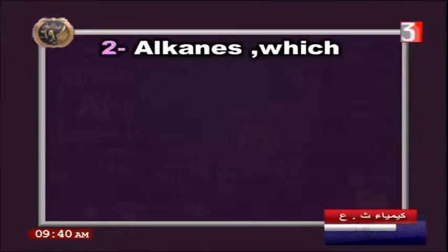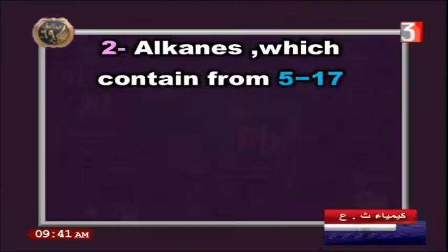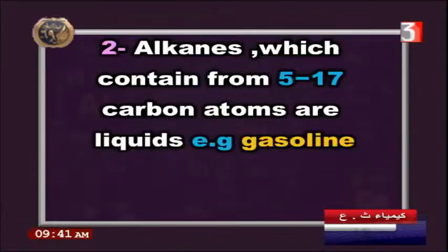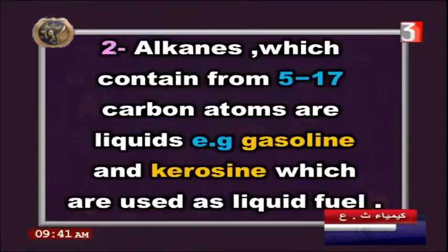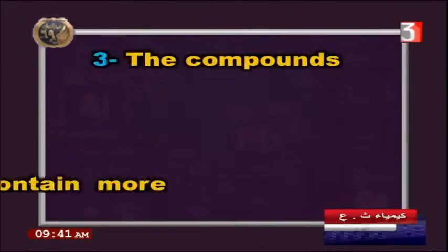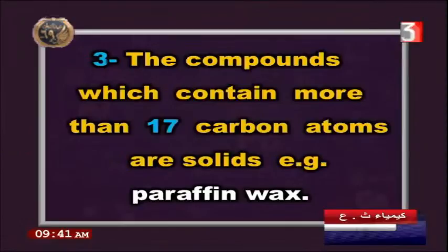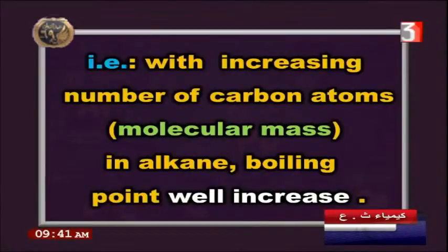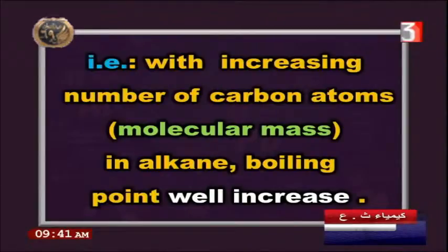Alkanes containing from five to seventeen carbon atoms are liquids, such as gasoline and kerosene, used as liquid fuels. Alkanes with more than seventeen carbon atoms are solids, such as paraffin wax. With increasing number of carbon atoms and molecular mass, the boiling point of alkanes increases, because more energy is needed to break the sigma bonds between molecules.